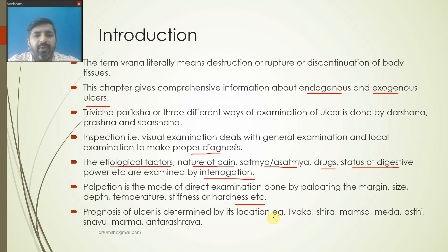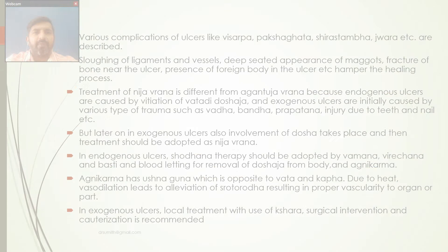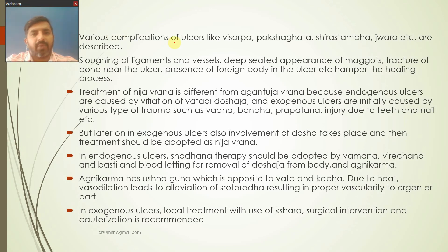Prognosis of ulcer is determined by location such as Tvak, Shira, Mamsa, Meda, Asthi, Snayu, Marma, Antra, Ashaya, etc. Various complications of ulcer like Visarpa, Paksha Gatha, Shira Stambha, Jvara etc. are described in this chapter.